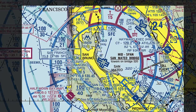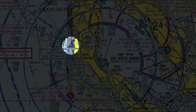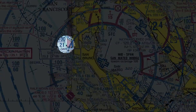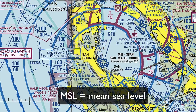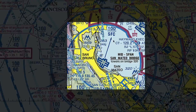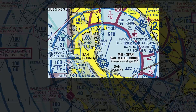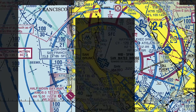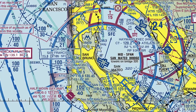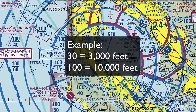Typically, it consists of a surface area with at least two layers or shelves, and you can see how the altitudes change in this chart. These altitudes are in MSL, or height above mean sea level. So here, the airspace is between the surface and 10,000 feet. Over here, the airspace is between 2,100 feet and 10,000 feet. And then finally here, the airspace is between 3,000 feet to 10,000 feet. Remember that the altitudes on aeronautical charts are listed in hundreds of feet, so you need to add two zeros to calculate the actual value.